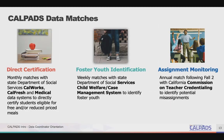The data matches include direct certification, which are monthly matches with the State Department of Social Services' CalWorks, CalFresh, and Medi-Cal data systems to directly certify students eligible for free and/or reduced-price meals. Weekly matches with the State Department of Social Services' Child Welfare Case Management System to identify foster youth. And assignment monitoring, which is an annual match following the Fall 2 submission with the California Commission on Teacher Credentialing to identify potential misassignments.